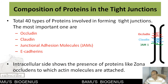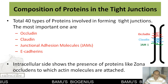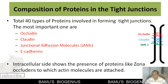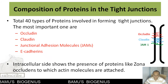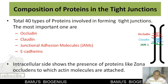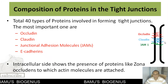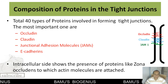Now we will discuss the composition of proteins in tight junctions. There are about 40 different types of proteins involved in the formation of tight junctions, which is why it is called a protein complex. The important transmembrane proteins include occludin — the literal meaning of occludin means to stop — and occludin proteins are arranged in such a manner that they will not allow any type of molecule to pass through. Another transmembrane protein is claudin, which has been suggested to be responsible for passage of some sorts of ions.